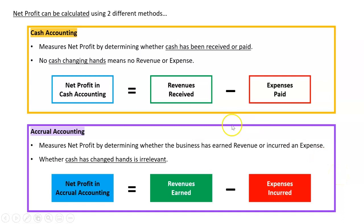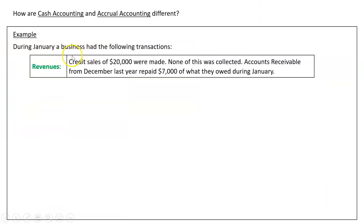The main difference is that under cash accounting revenues are recorded when received and expenses when paid, whereas under accrual accounting revenues are recorded when earned and expenses when incurred. So how are they actually different in practice? Let's take an example. During January a business had the following transactions.